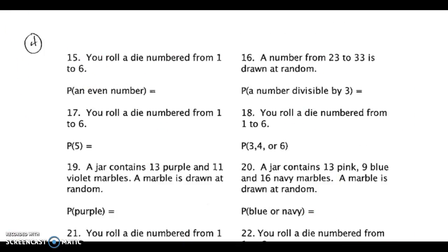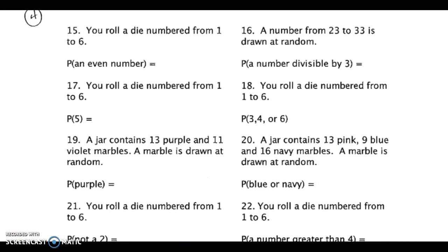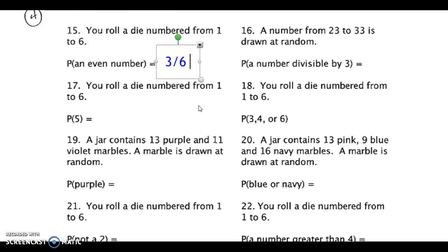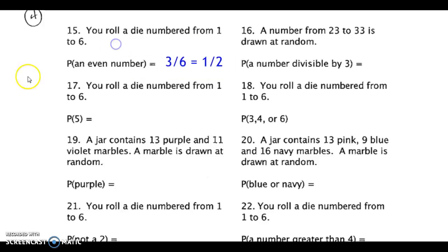Let's move on to the next page. For the first question, you roll a die numbered from 1 to 6 and we're looking for the probability of an even number. Without writing out the sample space, the probability of an even number is 3 out of 6, which equals 1 half. It's very similar to the questions on the other side. Pause the video now and try these exercises — I will give you the answers in a moment.